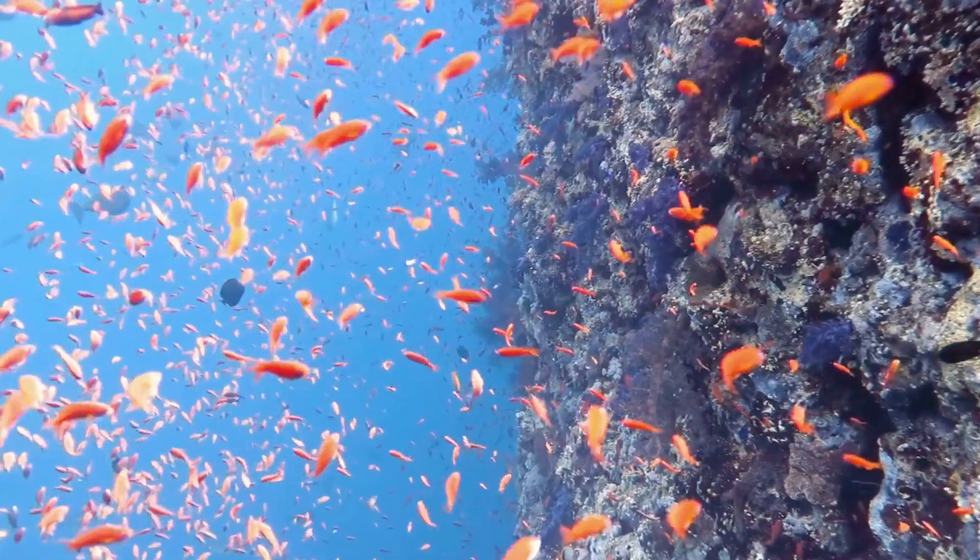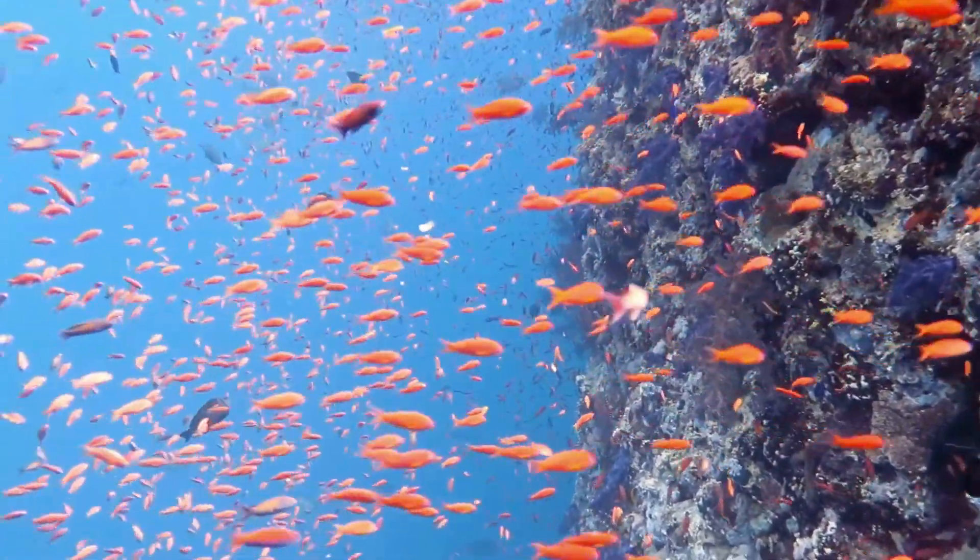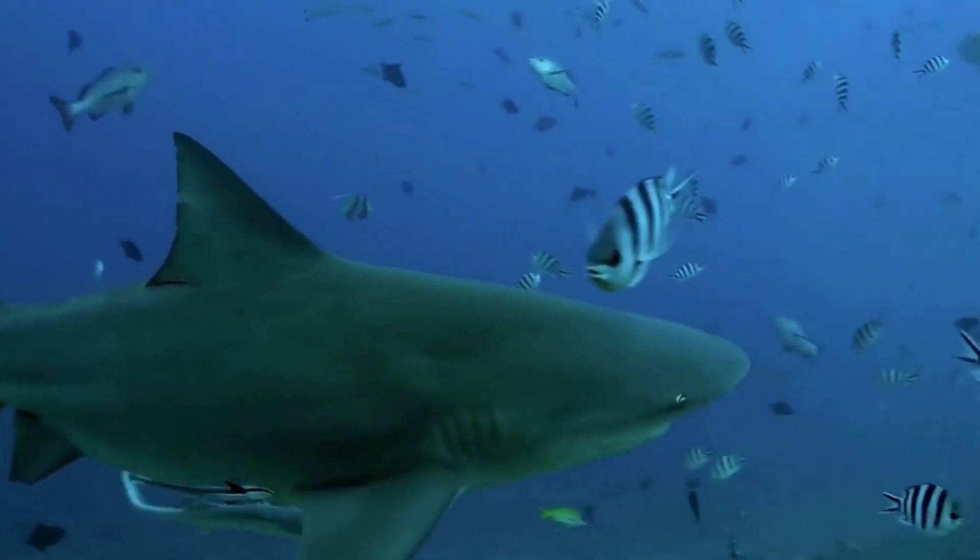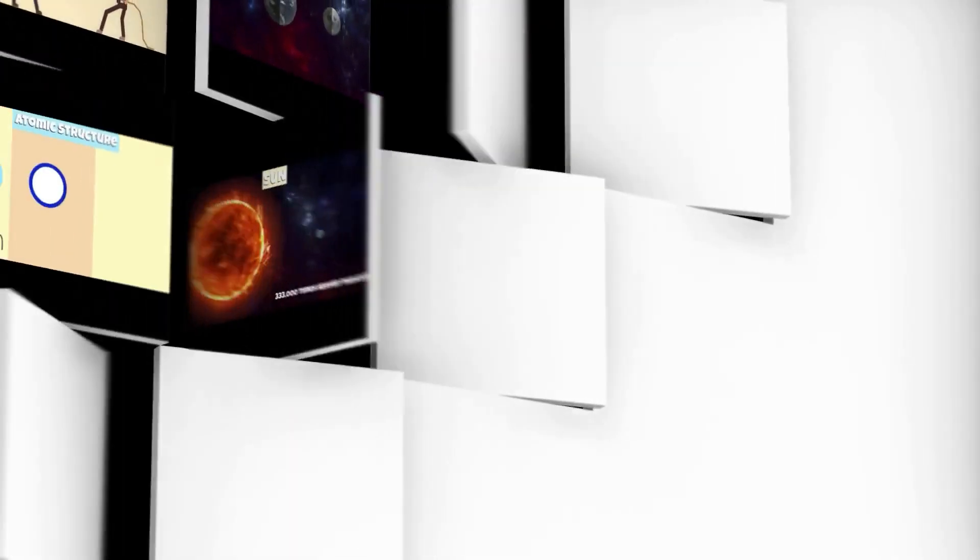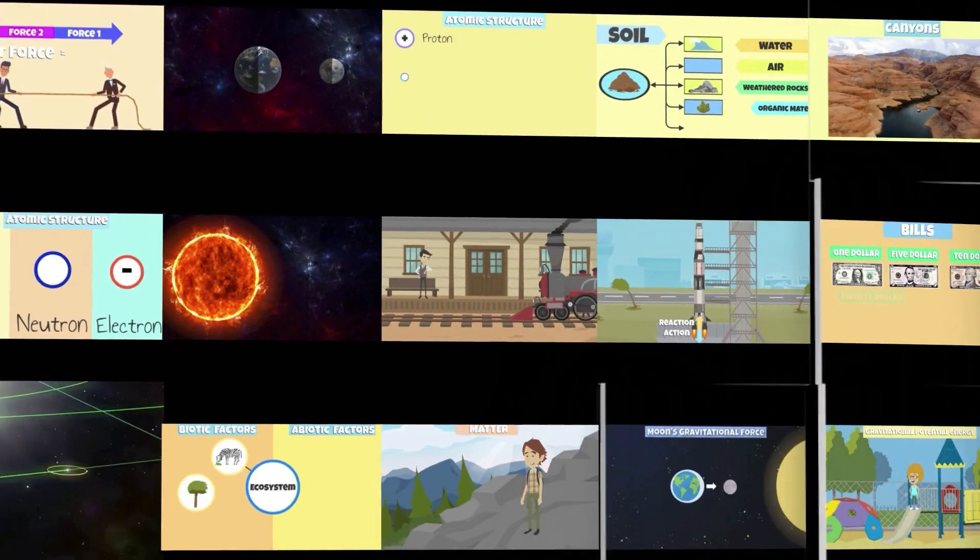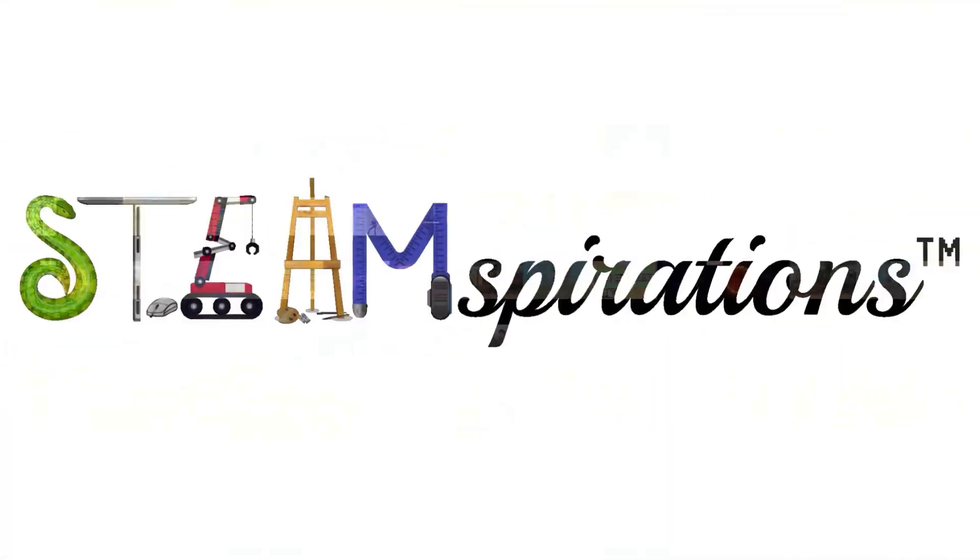Fish, for example, don't have a leader or the individual intelligence to guide their school, yet they instinctively swarm to protect themselves from predators. Hey there, File Learners. Welcome back to another exciting episode of Steamspirations, where we make education fun and engaging.